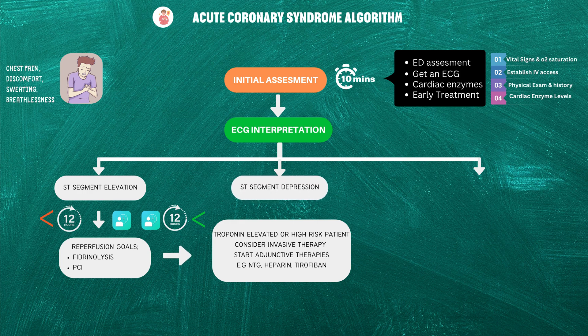Coming back to ECG interpretation in the second scenario, which is non-ST elevation MI: the ACS changes include ST depression or dynamic T-wave inversion, which strongly suggest ischemia. The immediate approach is invasive therapy as early as possible. Along with it, start adjunctive therapies such as nitroglycerin and heparin as indicated.